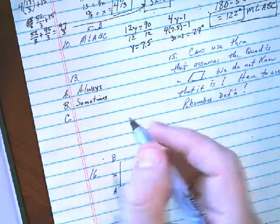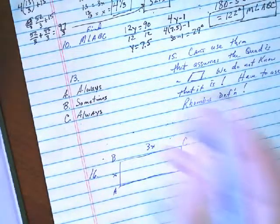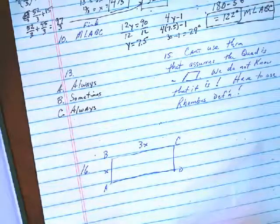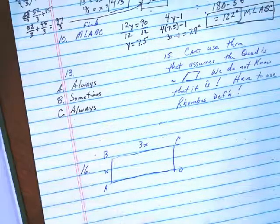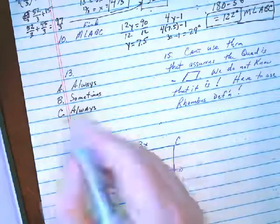A square is a rhombus. That is always true. A square is a rhombus. If you think about it, all the properties of a rhombus - diagonals are perpendicular, diagonals bisect opposite angles - all those things are true about a square.